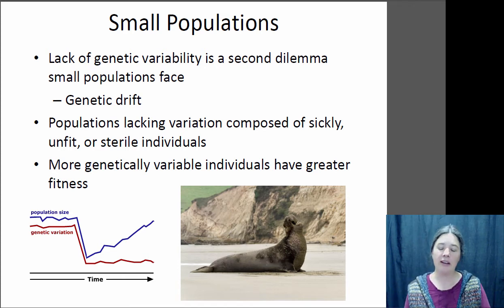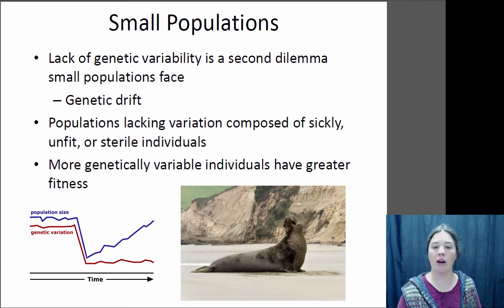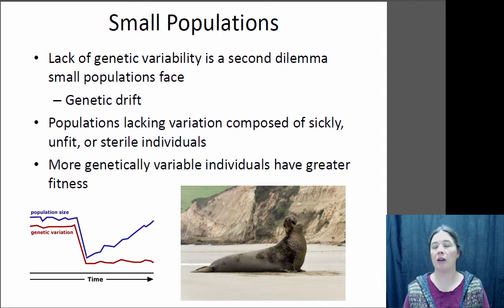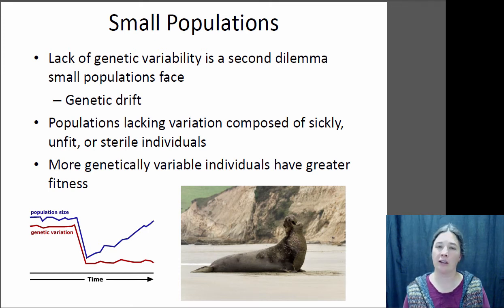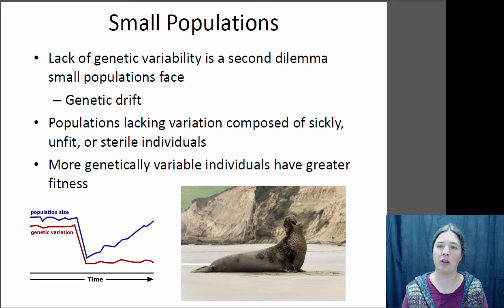The southern elephant seal is an example: the population was down to only about 60 individuals, and they are now extremely genetically homogenous with very little genetic diversity, even though the population has recovered in the absence of hunting.